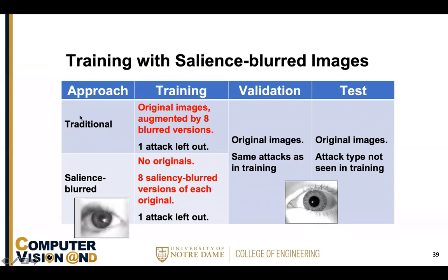We compare training with these selectively blurred images — where blurring is based on human judgment of salient regions — against the traditional method. The traditional method trains on original images augmented with eight different uniformly blurred versions. We use leave-one-attack-type-out. Validation uses original images with the same attack types as training. Test data uses original images — no blurring — for the attack type not seen in training. In our new salience-blurred approach, we drop the original images entirely and use only the eight selectively blurred versions.